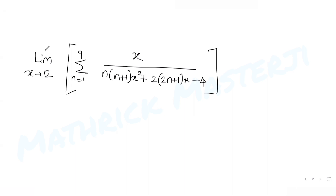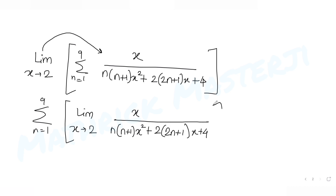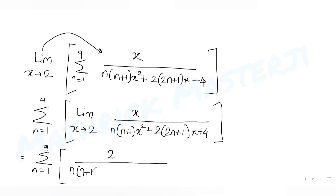If we apply the limit first and then take the summation — taking summation out and applying the limit inside — we substitute x = 2. We get summation n=1 to 9 of 2 over n(n+1)·4 + 2(2n+1)·2 + 4.